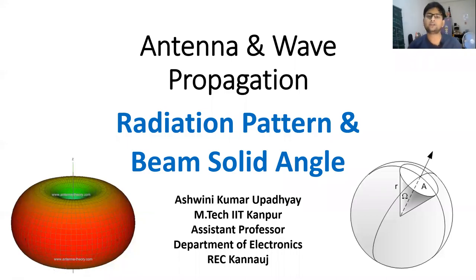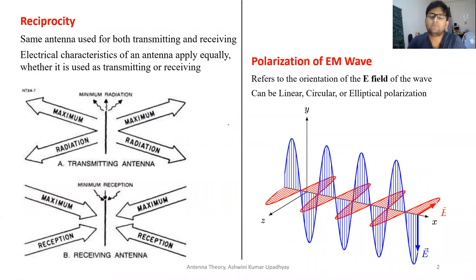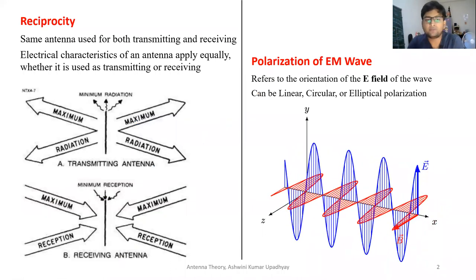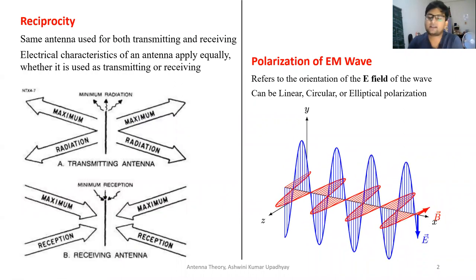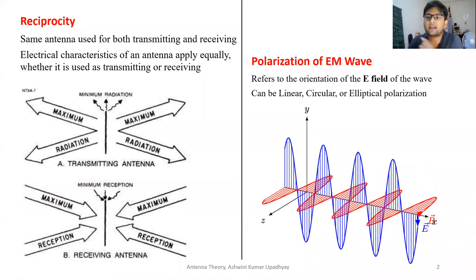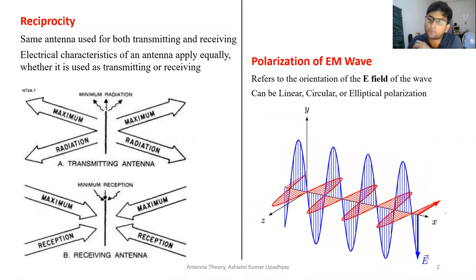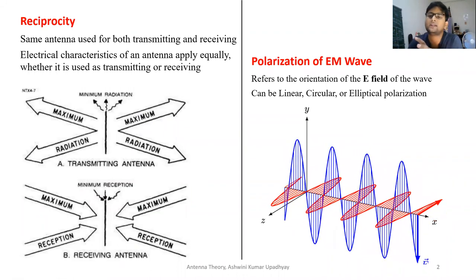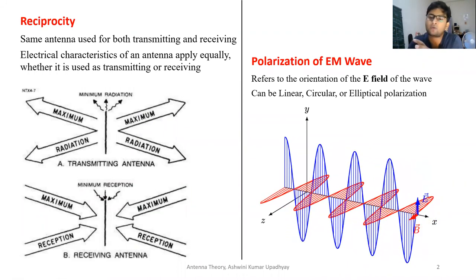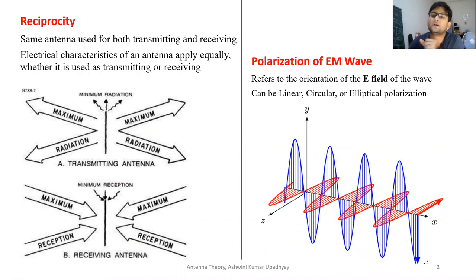In this video we are going to study about antenna radiation pattern and antenna beam solid angle. Before going to that, we will study two properties. The first is reciprocity. The reciprocity property of any antenna says that any particular antenna can be used both as a receiver and as a transmitter, so whatever properties exist for any particular antenna, they will be the same for both conditions.